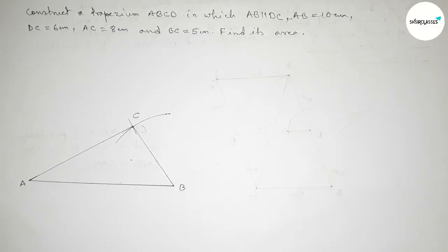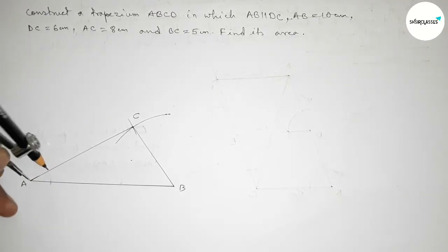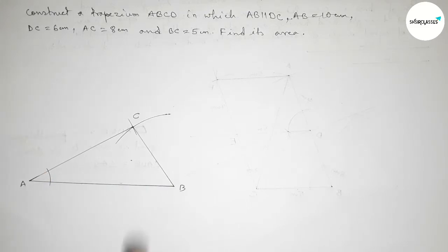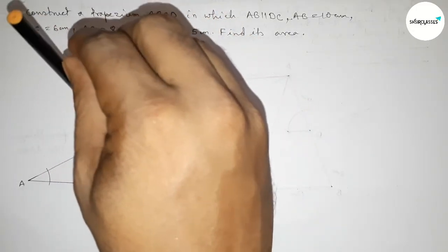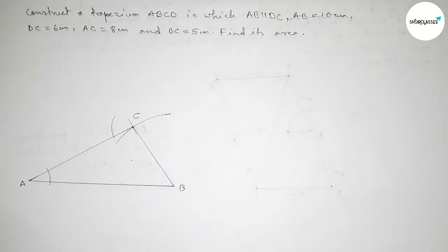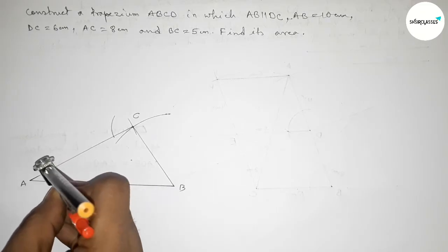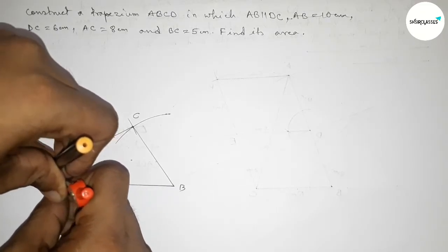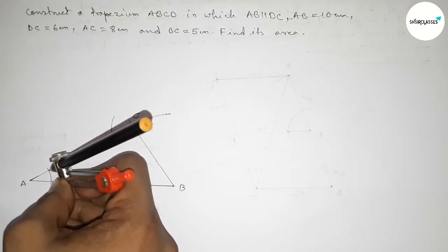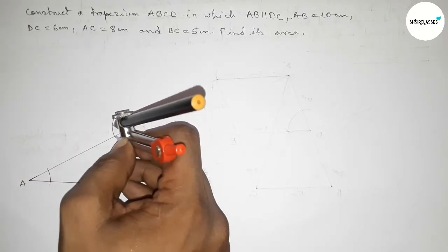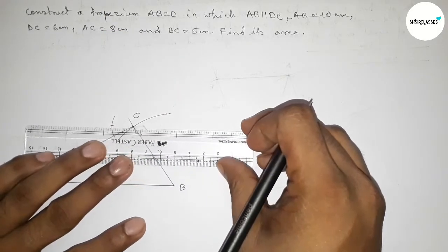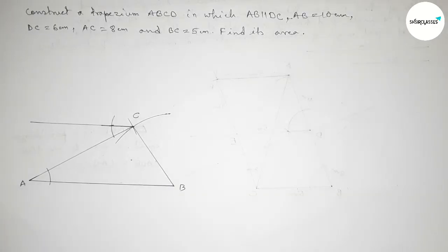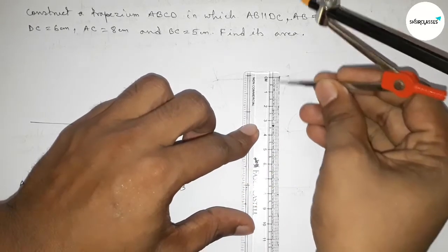Next we have to draw a parallel line at point C with line AB. For a parallel line we have to take the same angle at point C. First taking any length and drawing an arc, then putting the compass on point C with the same length and drawing an arc here. Now taking the length of the angle by this way and putting the compass here and cutting here. Joining this line which is parallel to AB.